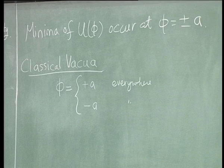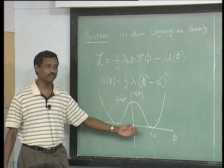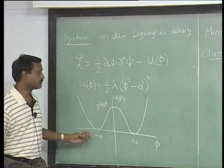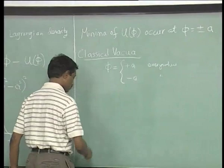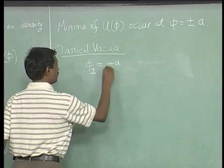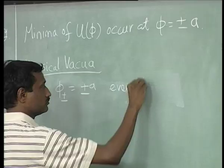One thing I should point out is that quantum mechanically, if you have a system with this kind of potential, the true ground state of the system is actually a symmetric one. Let us call the two solutions φ₊, where it is equal to plus a, and φ₋, where it is equal to minus a.